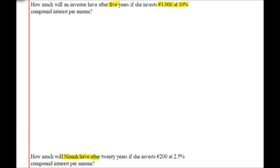So starting, we can see that this is an amount of €1,000 being invested. It's one amount, so we can just use the compound interest formula: A equals P times 1 plus i to the power of n.